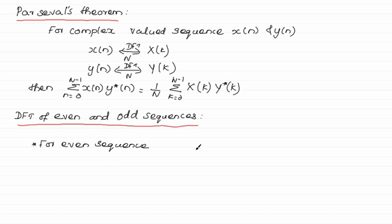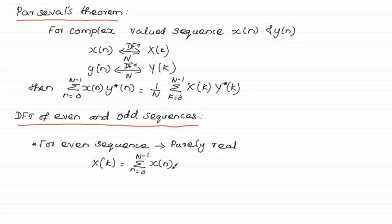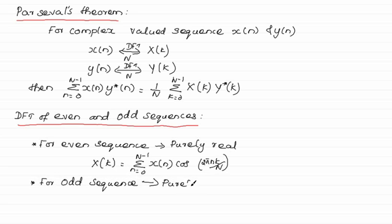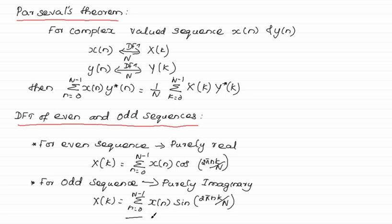For a real sequence, the DFT X(k) is equal to the summation from n=0 to N-1 of x(n) times cos(2π n k/N). For a real odd sequence, the DFT is purely imaginary: X(k) equals summation from n=0 to N-1 of x(n) times sin(2π n k/N).